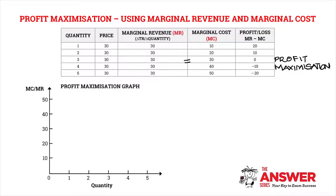Profit maximization, Grade 12s, can also be referred to as the equilibrium point. I'm going to fill in both terms so that you're familiar with both — profit maximization or equilibrium point.